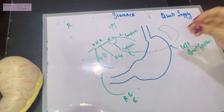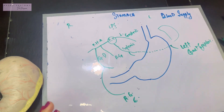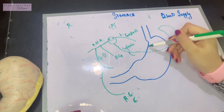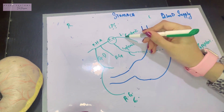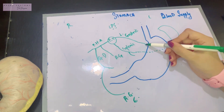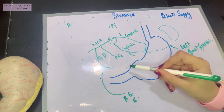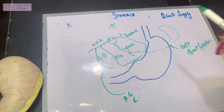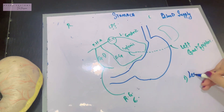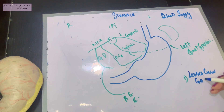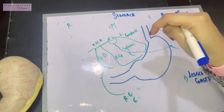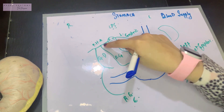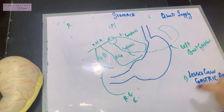Now let's give the stomach its blood supply. Along the lesser curvature, the left gastric artery will supply it, and an artery of the same name — the right gastric artery — will also accompany the left gastric artery in supplying the lesser curvature. So the lesser curvature is supplied by the gastric arteries: the left is derived directly from the celiac trunk, whereas the right gastric artery is derived from the proper hepatic artery.